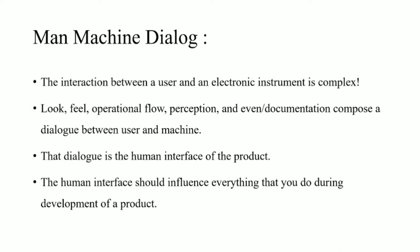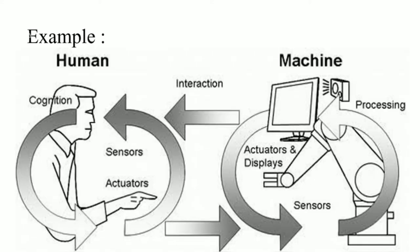The human interface should influence everything that you do during development of a product. Man-Machine Interaction is described as the interaction and communication between human users and a machine — a dynamic technical system — via a human-machine interface. The real-time aspect distinguishes the fields of human-machine systems and human-computer interaction, which are otherwise strongly related.